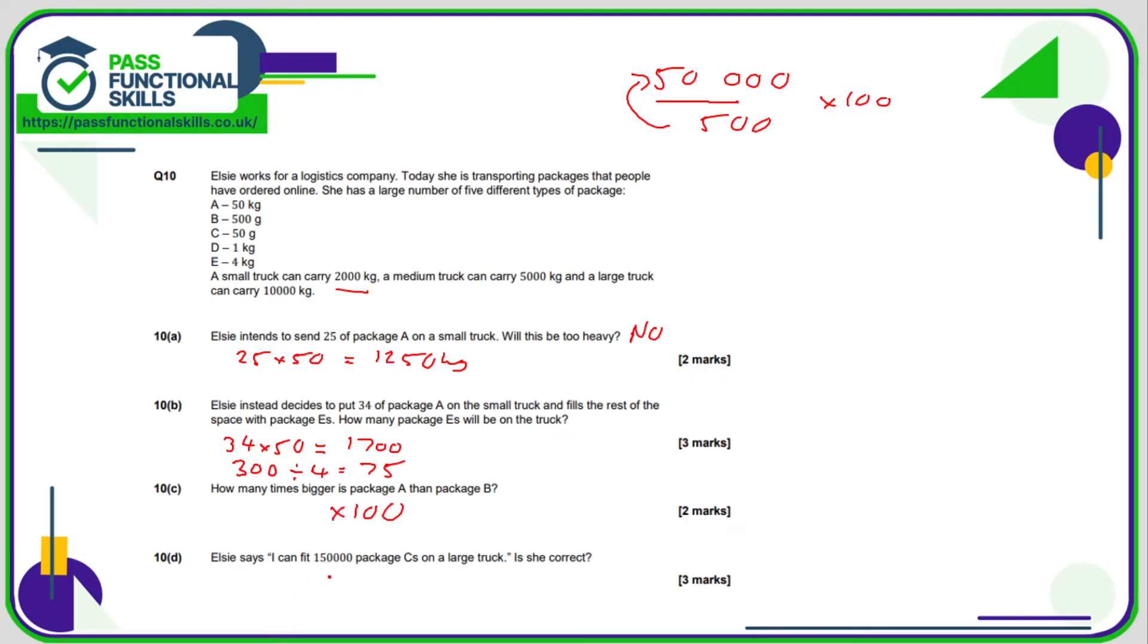Elsie says I can fit 150,000 package C's on a large truck. Is she correct? Well, 150,000 multiplied by package C, which is 50 grams. That equals quite a large amount, which I'm, and remember this amount is in grams. So if I now divide that by 1,000, I've got it in kilos and that works out as 70, sorry, 7,500 kilos. Can that fit on a large truck? Well, a large truck's got a capacity of 10,000. So yes, she's correct. She can definitely fit 7,500 kilos into a large truck. No problem at all.